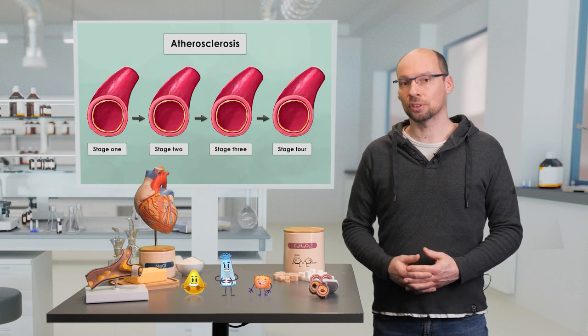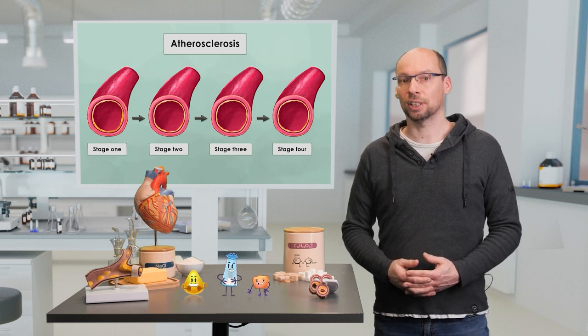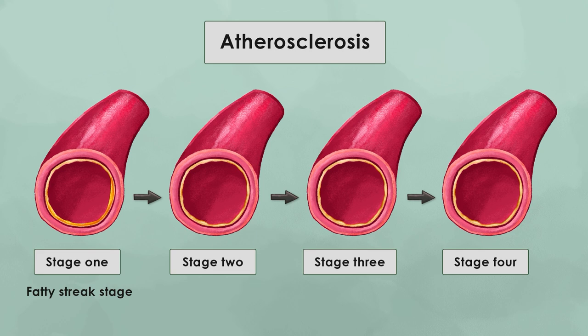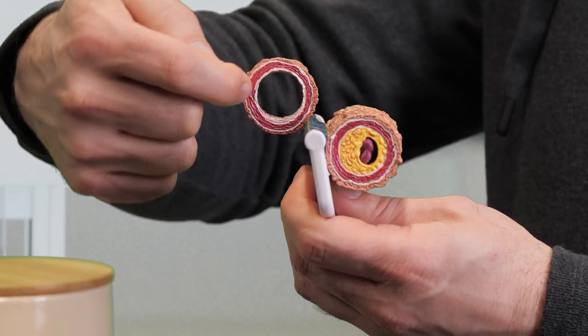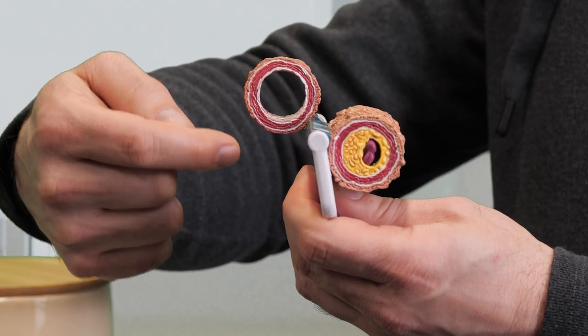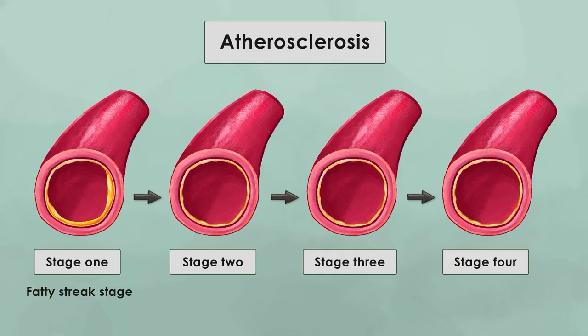The first stage is the fatty streak stage, in which cholesterol and other substances accumulate in the intima of the artery. This stage is often seen in young people and is generally reversible with lifestyle changes such as diet and exercise.